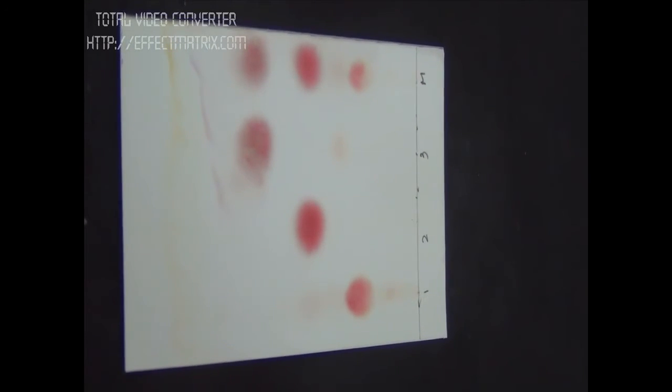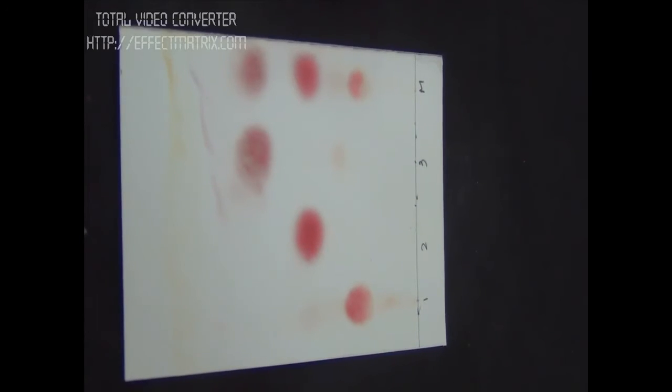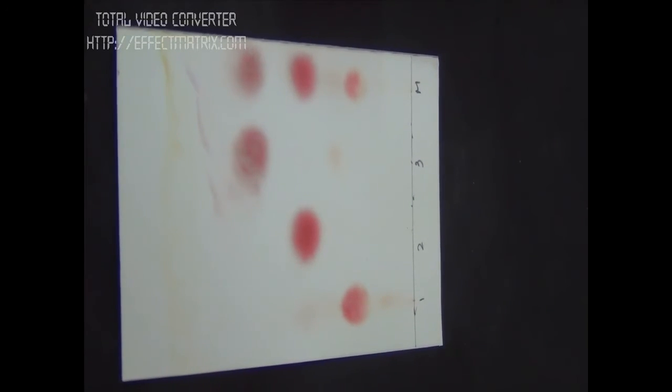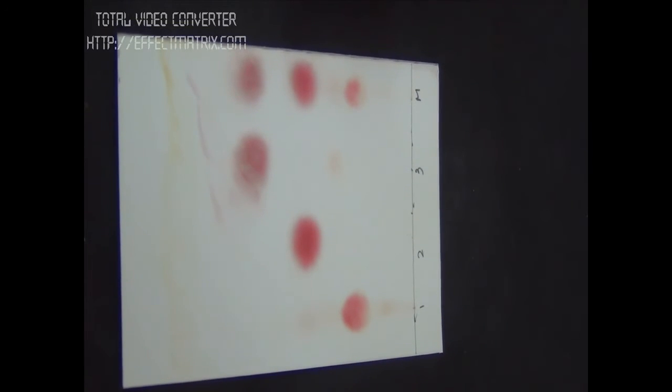Now the TLC plate is ready. We have sprayed ninhydrin. After spraying, we have kept the plate in hot air oven at 81 degrees.